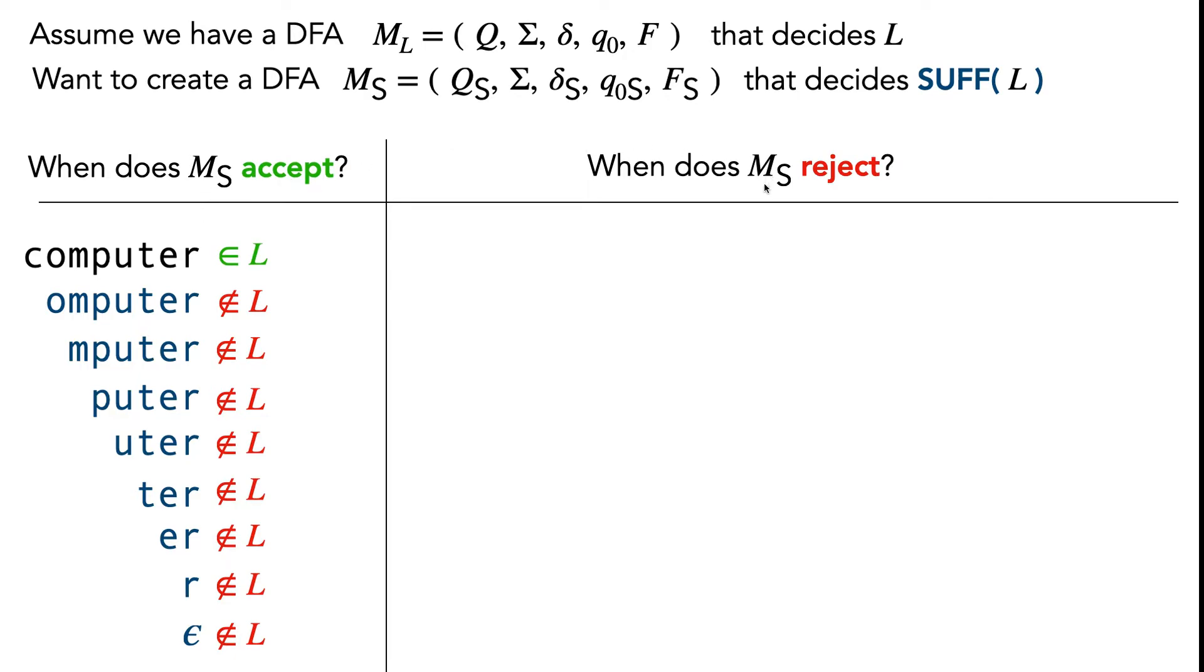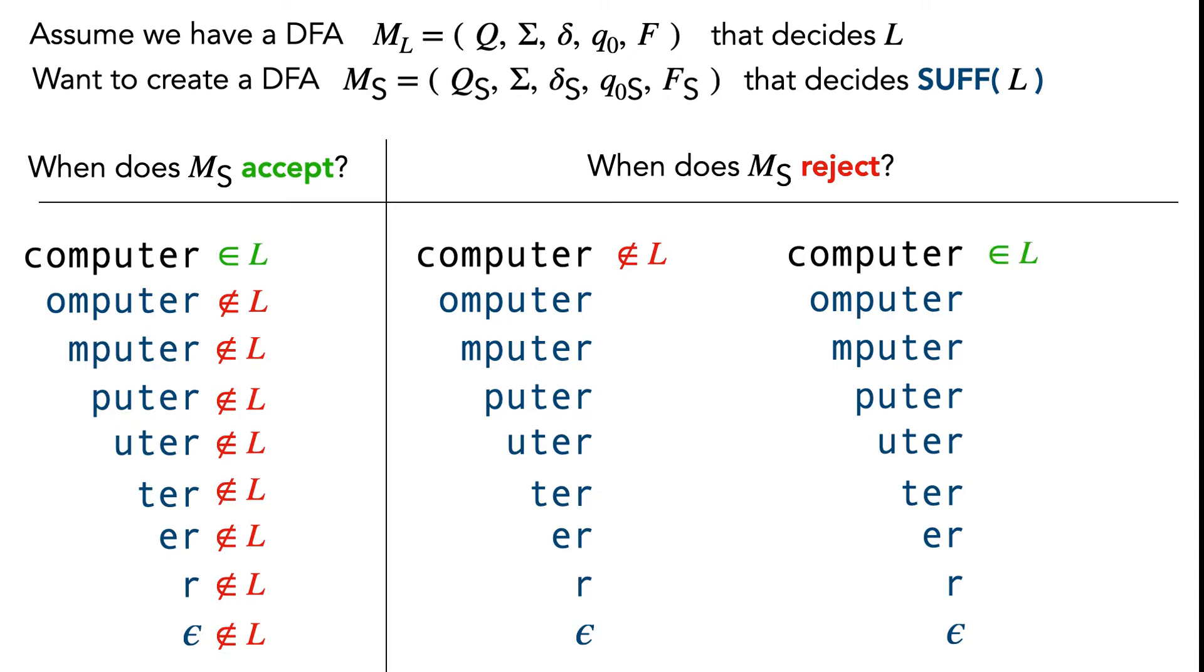There's a couple of ways that our machine M_S should reject. If you've got a string and it's not in L, it doesn't even matter what its proper suffixes are, we know that M_S should reject. If you've got a string and it is in L, but at least one of its proper suffixes is also in L, then we also know that M_S should reject.